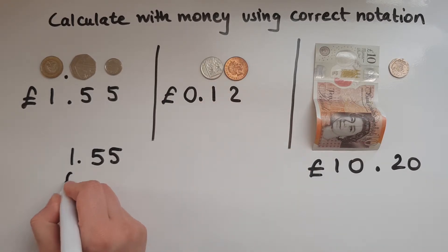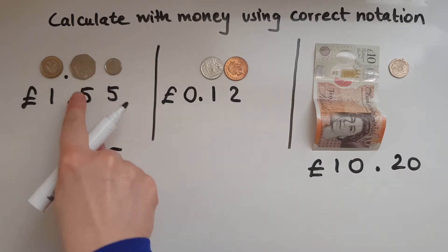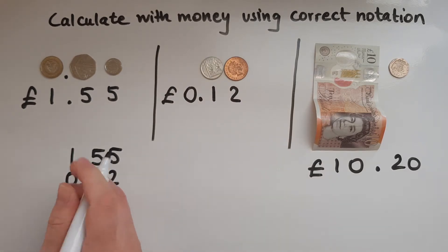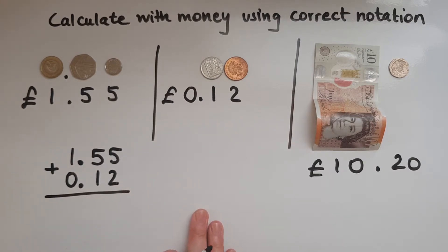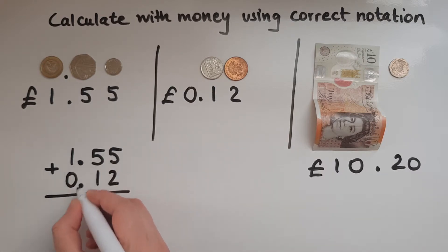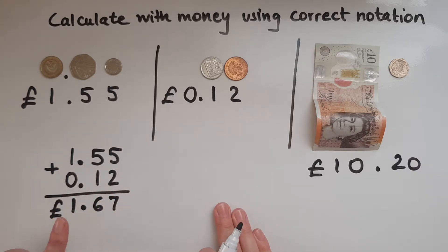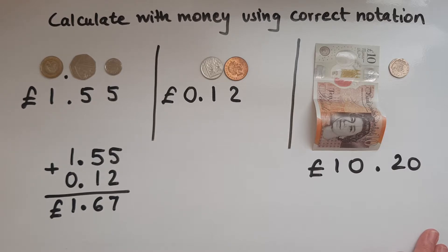I've got 12 pence here, but I've got to make sure I put a zero under the pounds column and the 12 pence where they belong — in the 10p column after the decimal point. I can see the decimal points are lined up under each other, always. Starting with the units just like with whole numbers: 5 and 2 make 7, 5 and 1 make 6, decimal point underneath, 1 and 0 make 1. So these two together cost 1 pound and 67 pence.